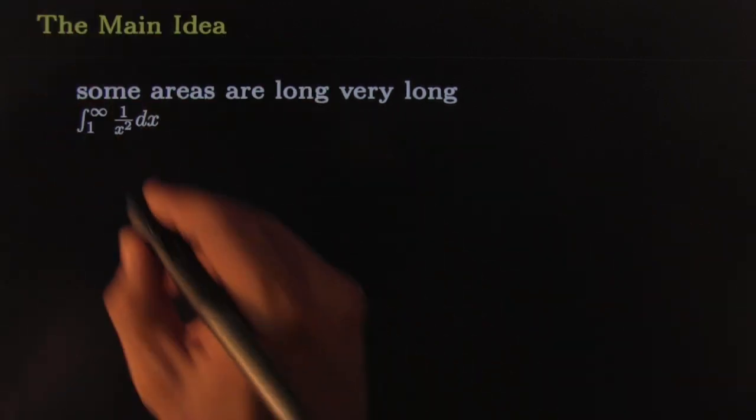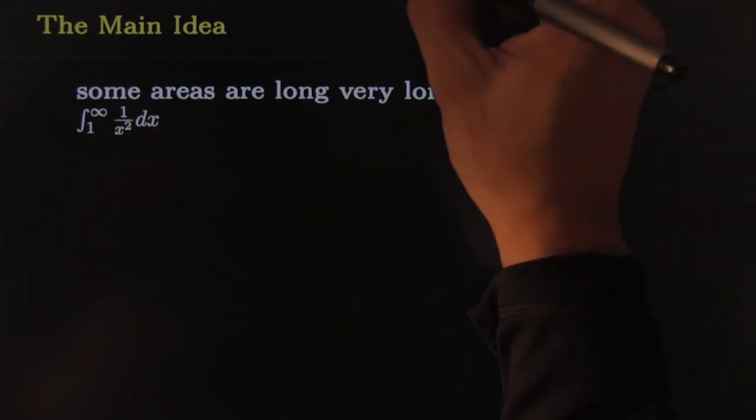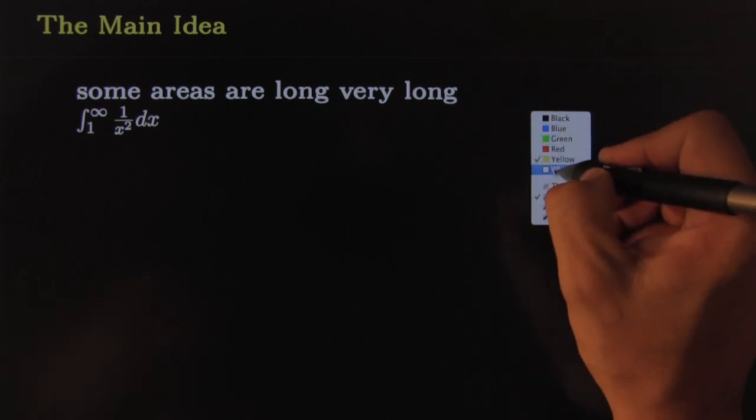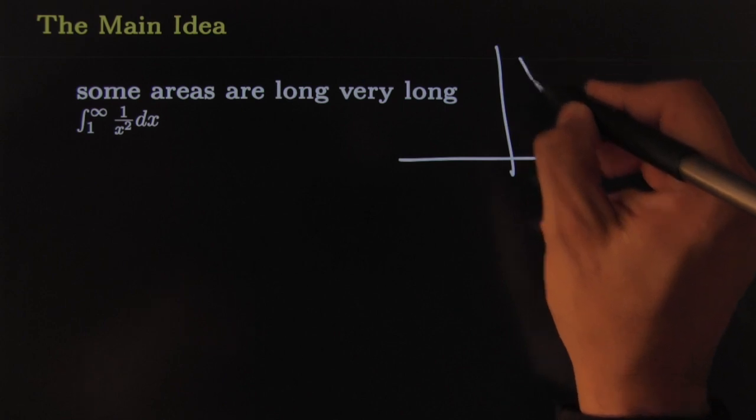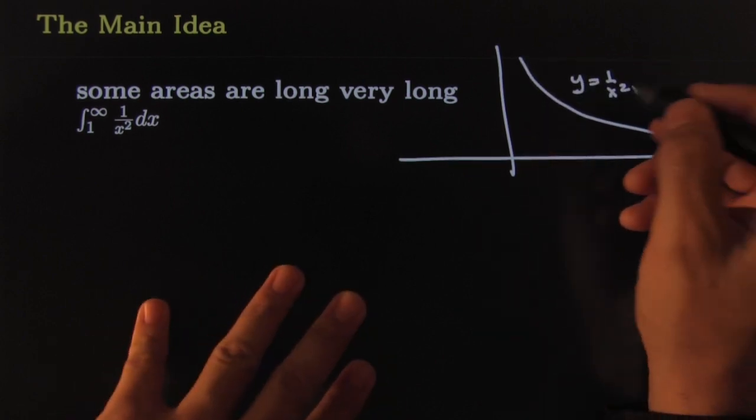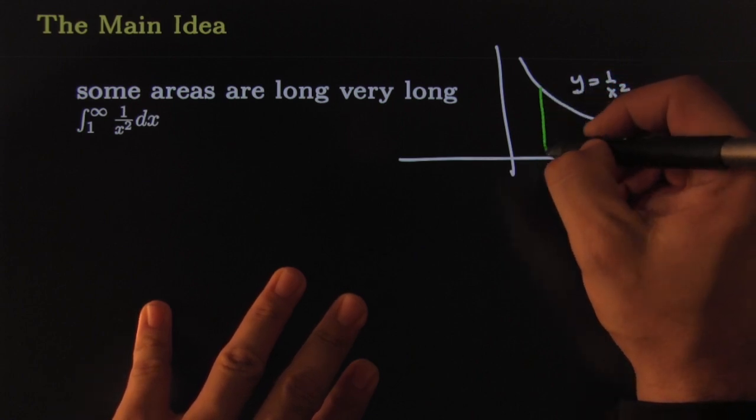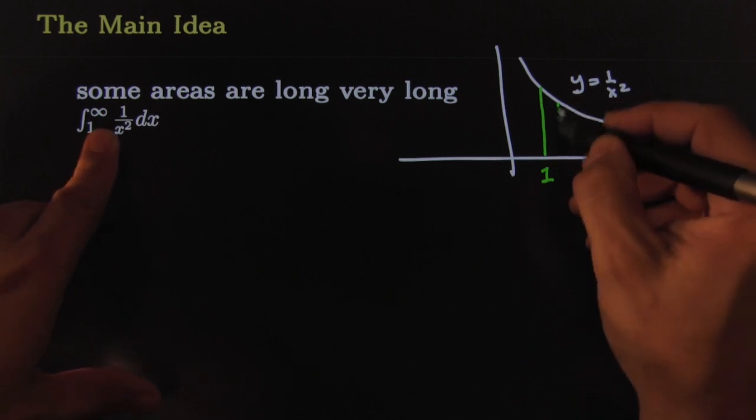Let's get on with the example. As an example, we've got here the integral from 1 to infinity of 1 over x squared. Sometimes we say that a picture's worth a thousand words, so let's go on and draw a picture. Here's the picture: y equals 1 over x squared, and here's the area that is represented by the integral.